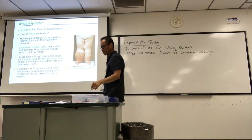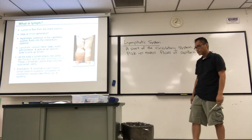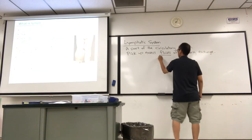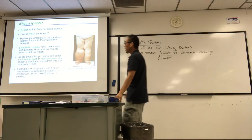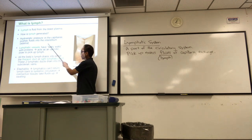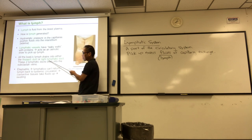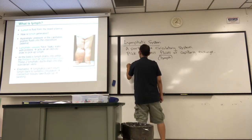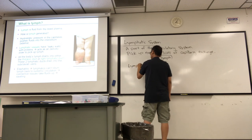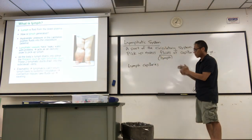That answers the first question on my slide today: how is lymph generated? Lymph is fluid. Hydrostatic pressure in the capillaries pushes fluids into the interstitial space. The lymphatic vessels that pick up excess fluid have leaky walls — they can basically suck up the fluids. This system starts with the tiniest ones, the lymph capillaries.